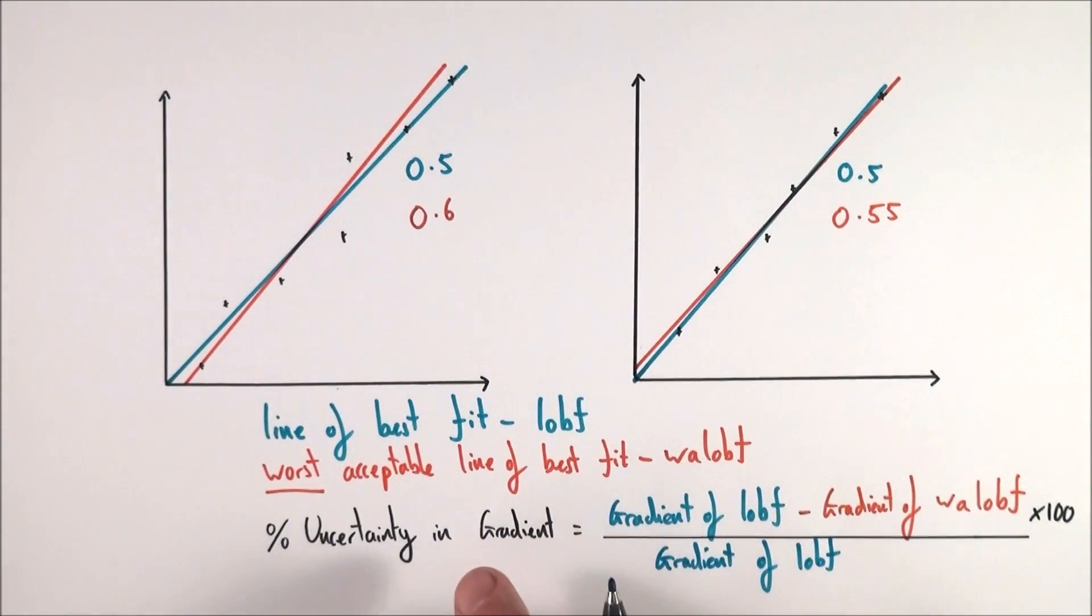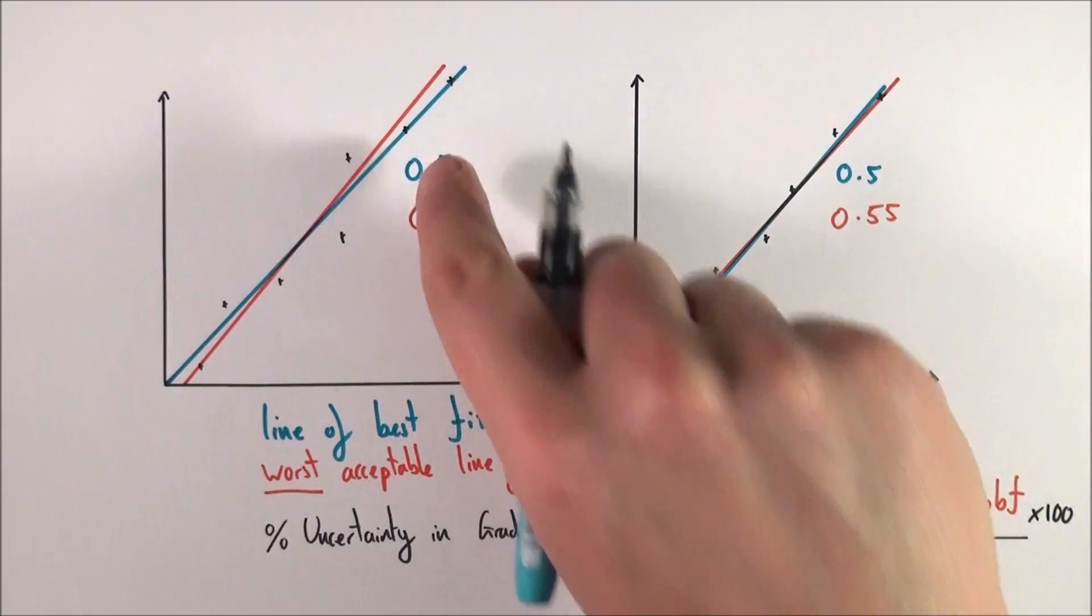And here we have the equation. Basically, the percentage uncertainty in the gradient is equal to the gradient of the lob off minus the gradient of the wallop off, over the gradient of the lob off, multiplied by 100. So what that means is basically the bigger the difference in these gradients, the greater the uncertainty in that line.